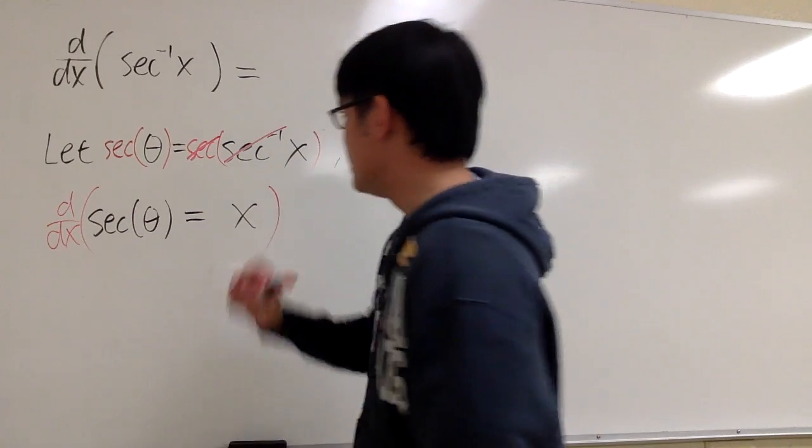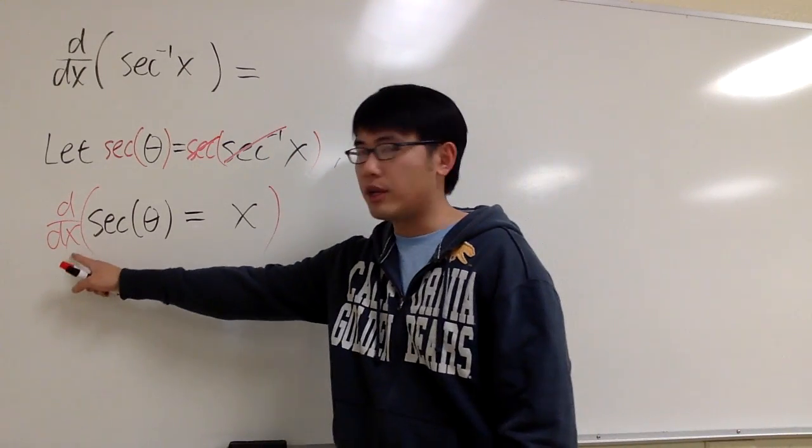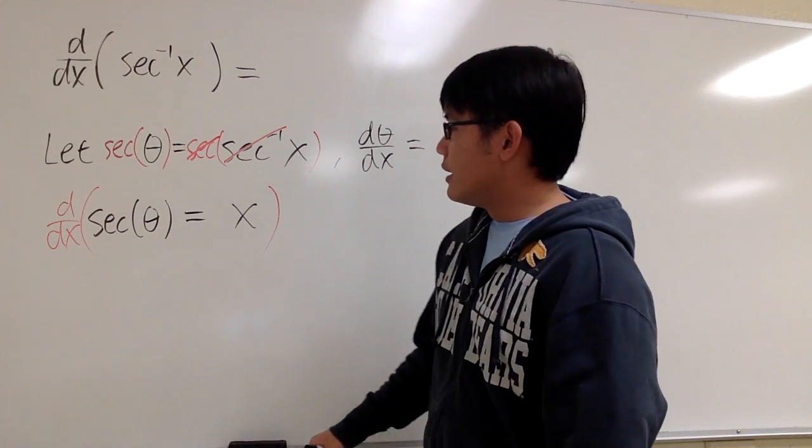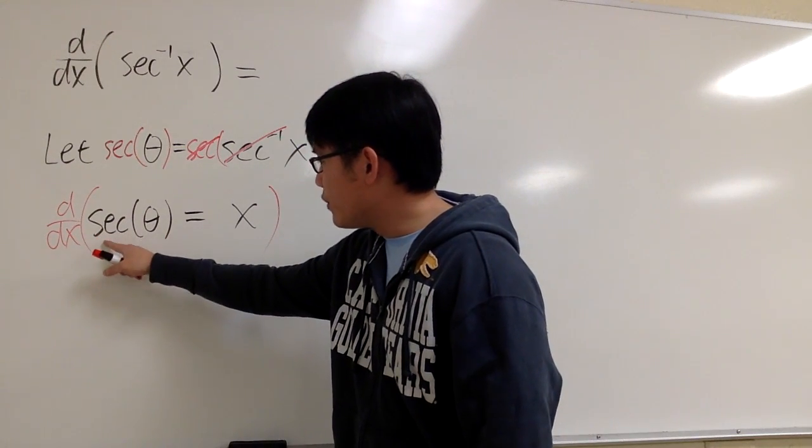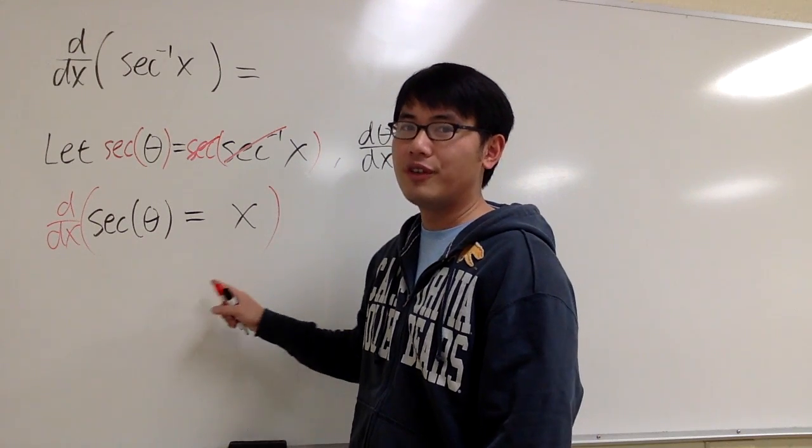So I'll put d/dx across this equation to represent that we are taking the derivative with respect to x. So for the first part, the derivative of secant of something is just going to be the secant of the same thing times tangent of the same thing.